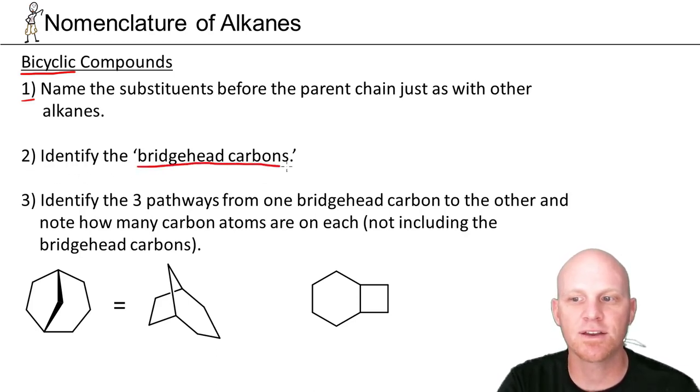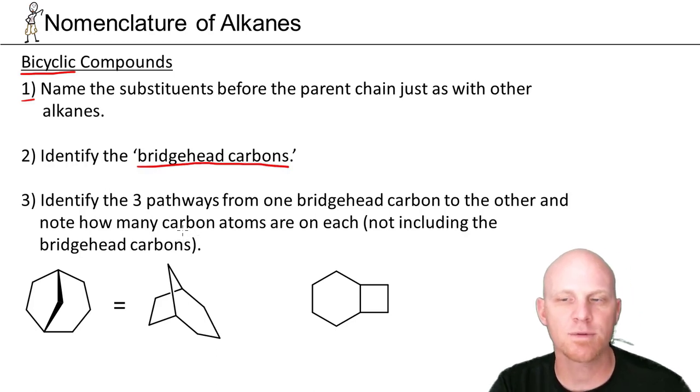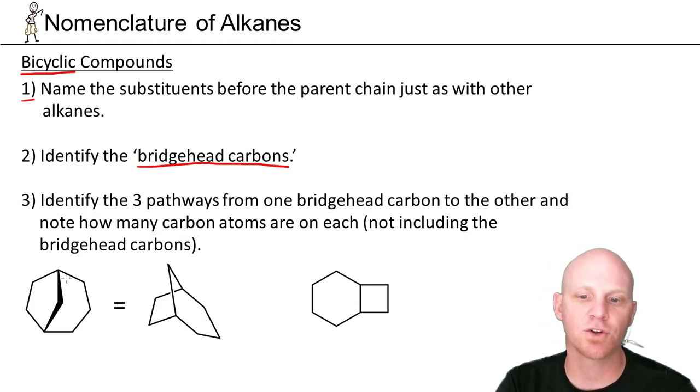The bridgehead carbons are the two carbons that are part of every single ring you can draw. In this structure here, those two bridgehead carbons are these two. They're part of this ring, and this ring, and the big ring, and so on and so forth.